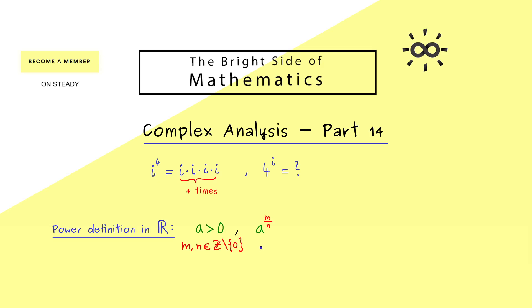Now a to the power m over n can be seen as a multiplication. More precisely, we have a to the power 1 over n, which is the nth root of a, and then we have this root to the power m. So we have this positive number m times in the multiplication. In other words, the power with a rational exponent is well-defined in this sense, and this is a completely natural definition.